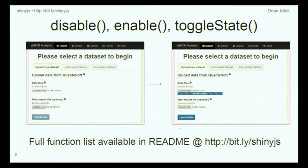Another set of functions people use often in ShinyJS are the disable and enable functions. The slide on the left shows a different app when it initializes. You can see the upload data button is grayed out and not clickable — it's disabled. After the user selects the dataset, I call the enable function so the button becomes enabled. This makes your app more user-friendly and intuitive, helping guide the user toward what actions they can or should do at each point.